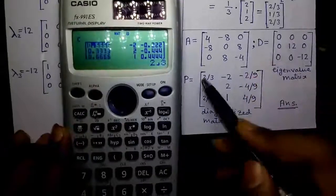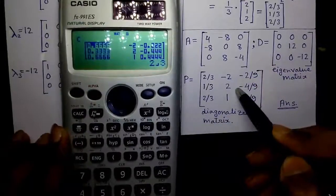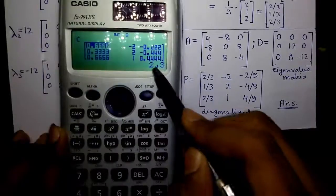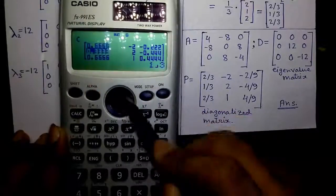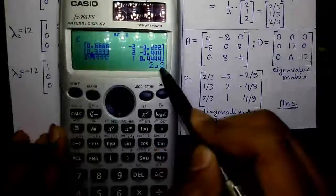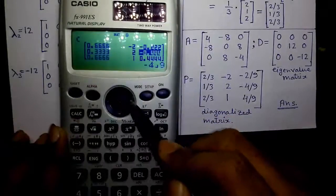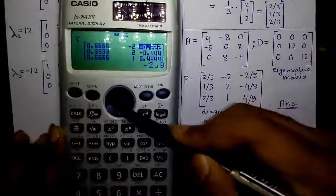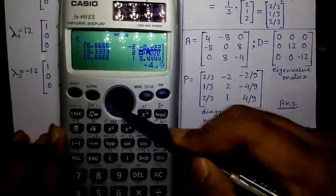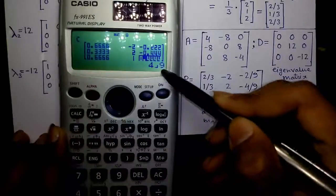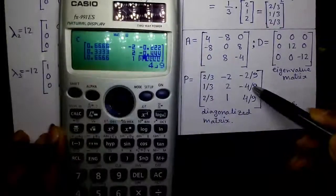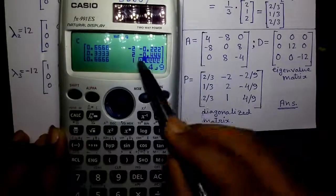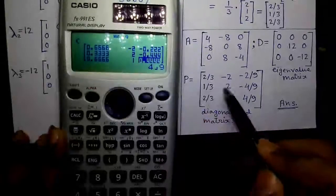And finally, this matrix P is stored as matrix C, which is 2/3, 1/3, 2/3. Minus 2/9, minus 4/9 and 4/9, minus 2/9, minus 4/9 and 4/9. And the middle column, they are minus 2, 2 and 1.